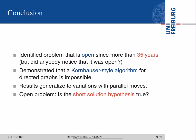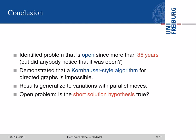Let me conclude. We have identified a problem that had been open for 35 years. Interestingly, I noticed it was open when I assumed it had already been solved and used that result, until I found out it had not been tackled yet. It might not have wide-ranging consequences, but we now know we cannot hope to come up with a Kornhauser-style algorithm for directed graphs in general. All the results I showed you generalize to variations of the multi-agent pathfinding problem, particularly when dealing with parallel moves. Finally, I identified another interesting open problem: whether the short solution hypothesis is true. Thanks for listening, and I'm now open for questions.